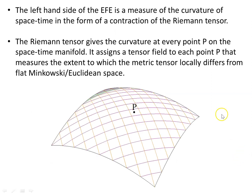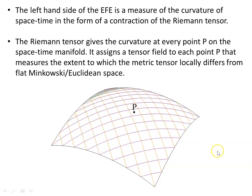The left-hand side of the Einstein field equation is a measure of the curvature of space-time in the form of a contraction of the Riemann tensor. The Riemann tensor gives the curvature at every point P on the space-time manifold. If we simplify the space-time manifold down to two dimensions for visualization — obviously the diagram is only two-dimensional and the space-time is four-dimensional — we can use this to make a point. The Riemann tensor assigns a tensor field to each point P that measures the extent to which the metric tensor locally differs from flat Minkowski or Euclidean space.